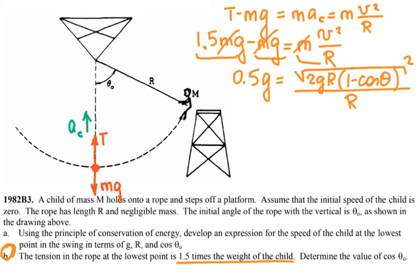If I square the whole thing, I have 0.5g is equal to 2gR times 1 minus cosine theta, because the square root and the square cancel, and divided by R. R can be cancelled, g can be cancelled.